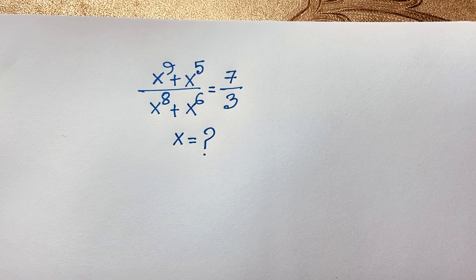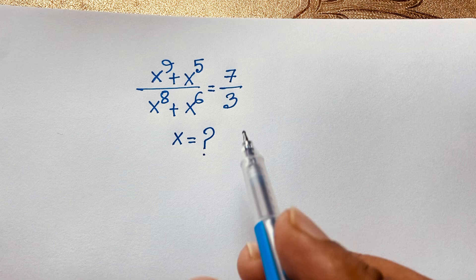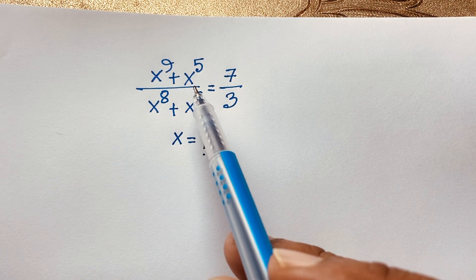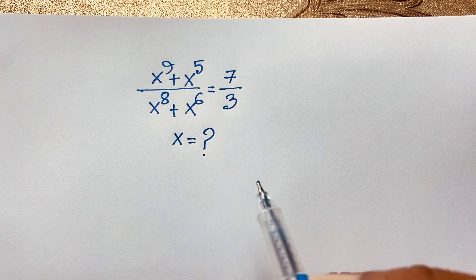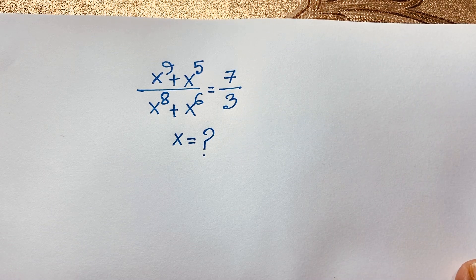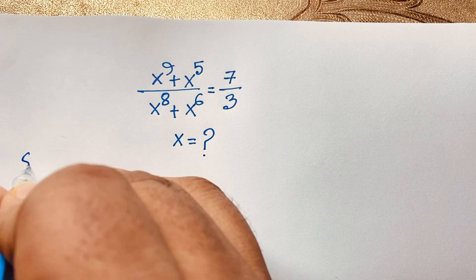Hello everyone. In this video we have solved a nice exponential math problem: x to the power 9 plus x to the power 5, over x to the power 8 plus x to the power 6, is equal to 7 over 3. We'll find out the value of x in this Olympiad math problem.